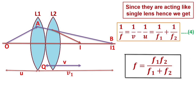Since they are acting like a single lens, we are considering the combined resultant effect of both lenses L1 and L2. So the focal length: 1/F equals 1/V minus 1/U equals 1/F1 plus 1/F2. Suppose this is equation 4.